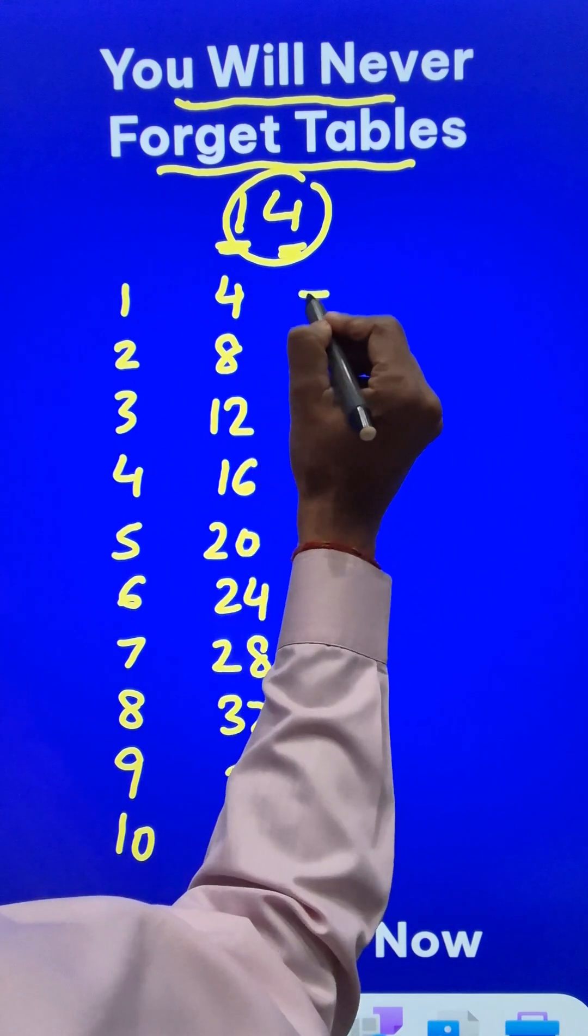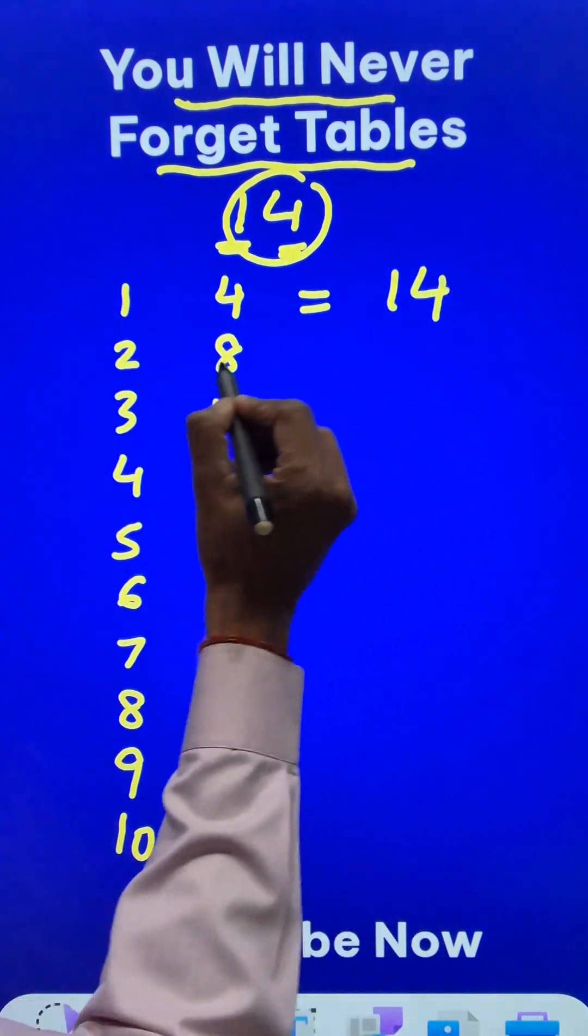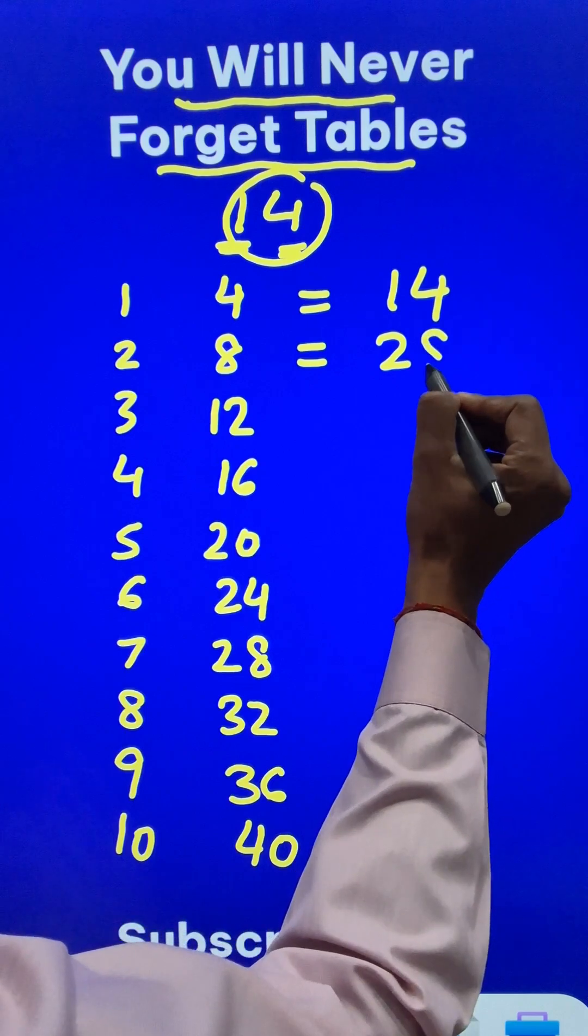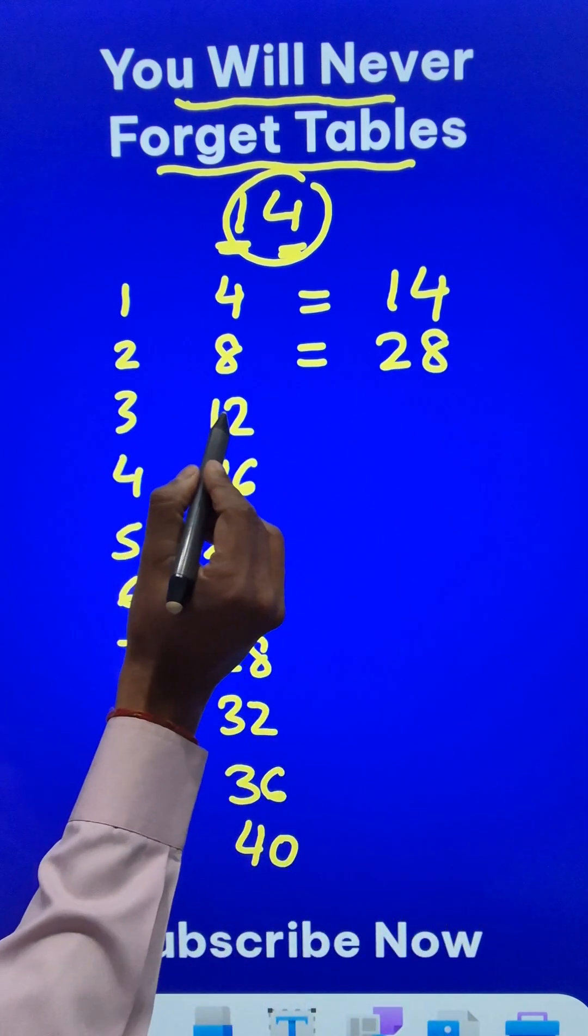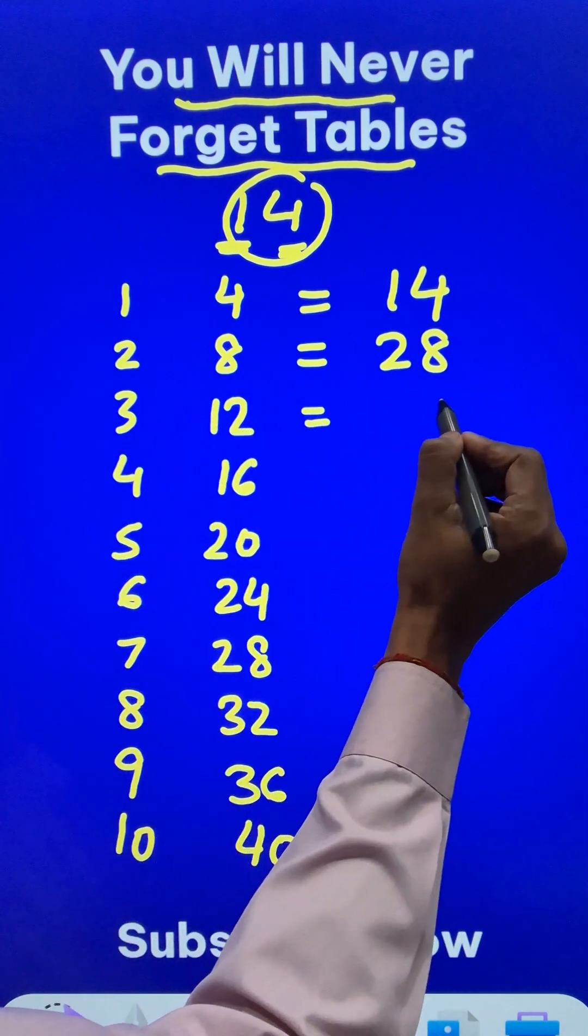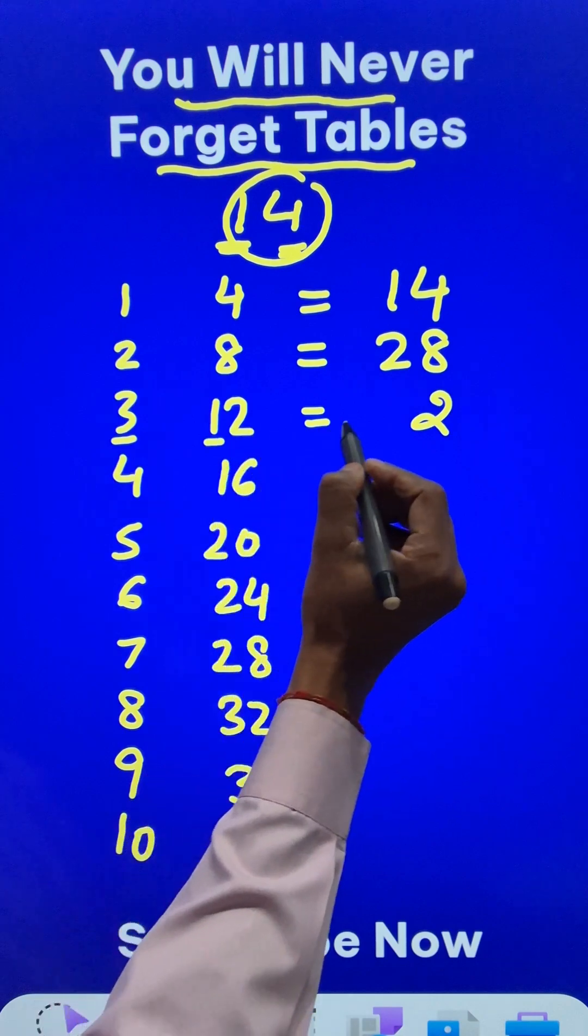Now to find the 14 times table, 1 and 4 is 14. 2 and 8 is 28, single digit numbers. 3 and 12, this is a double digit number. So write the unit digit 2, add the first digits, 3 plus 1, 4.